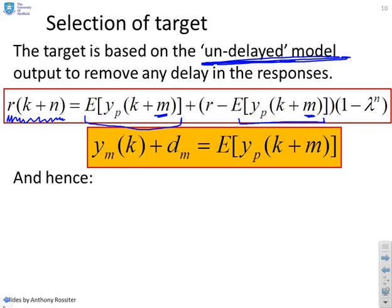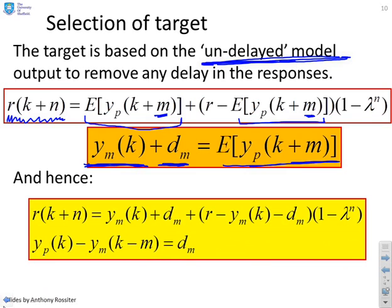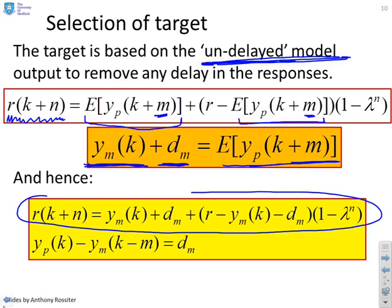However, we happen to know that the expected value of the process m samples ahead is the same as the model, the current value of the model, plus this bias term. So therefore if we plug that in, then what we end up with is a new expression for our target, which is this expression here. Now it looks a lot messier, but if you just keep your head clear, all we've done is replace yp(k) by the expected value of yp(k+m).